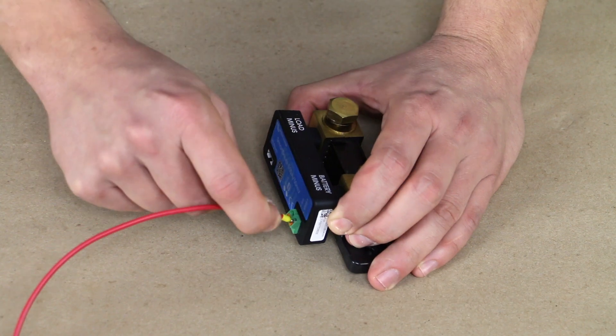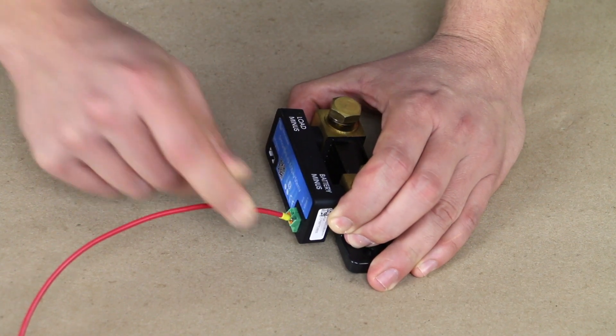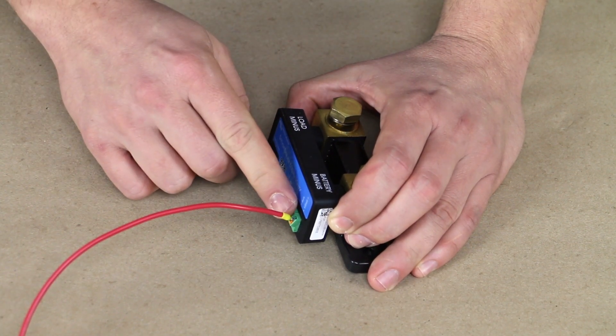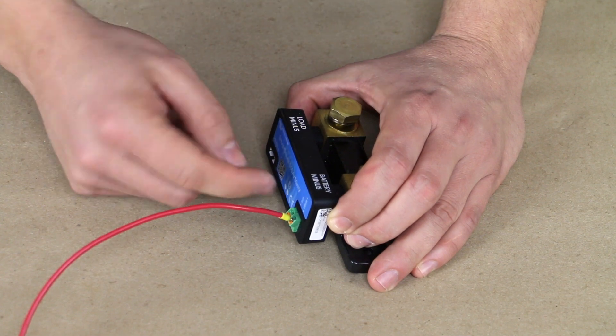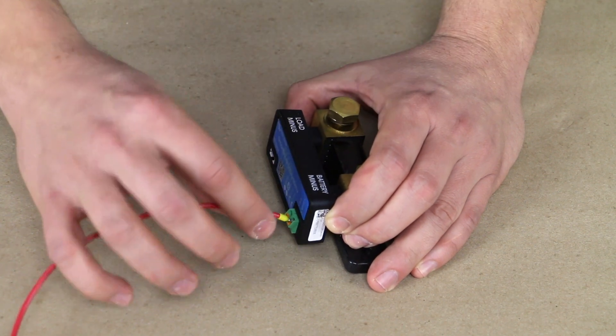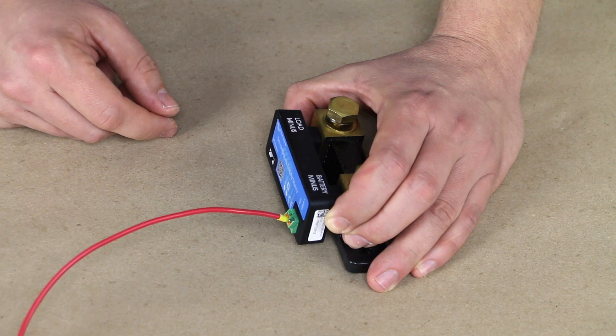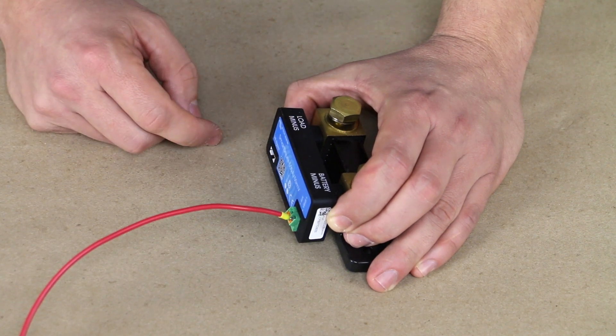And so this particular ferrule that I use works for this more shallow connection as well as some of the deeper inputs. And it makes sure that you're not going to be able to pull it out. If you use a ferrule that's too short, it's not going to get in there and grab, and it's more likely to pull out of that connection. So that's how you would add a ferrule.